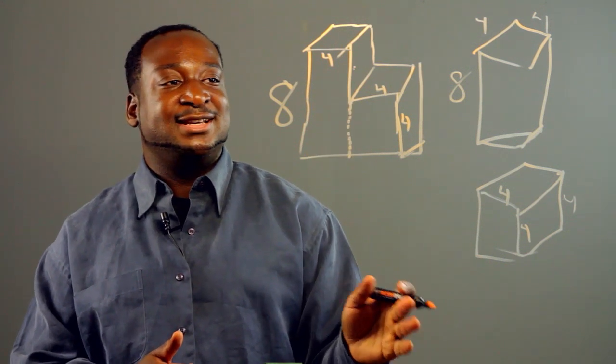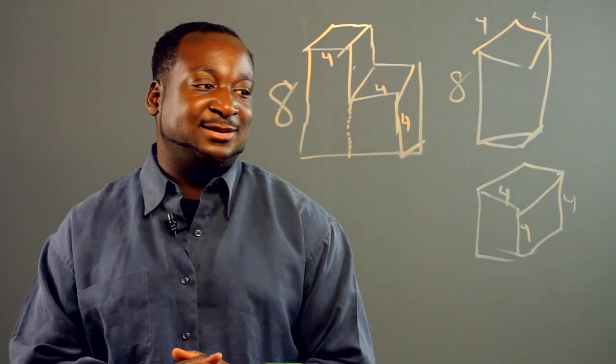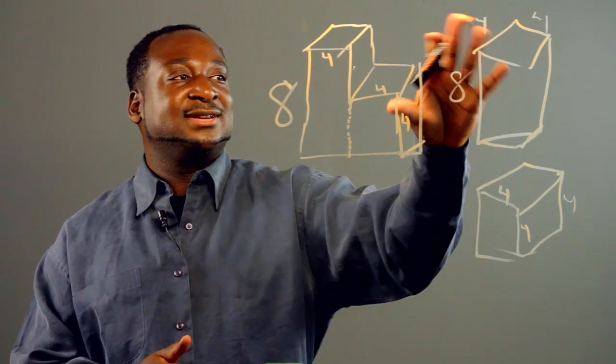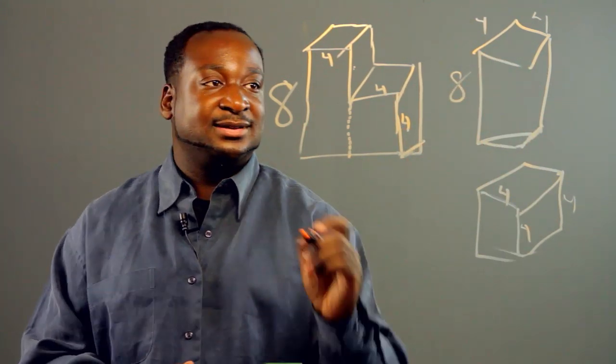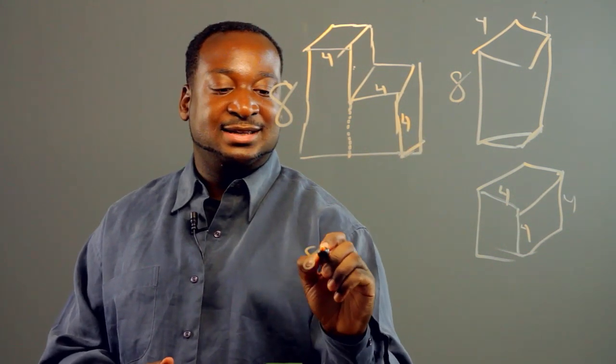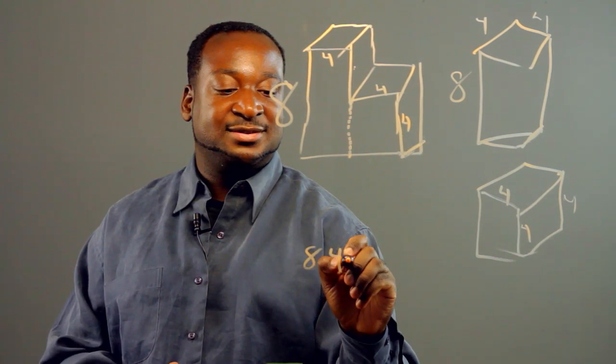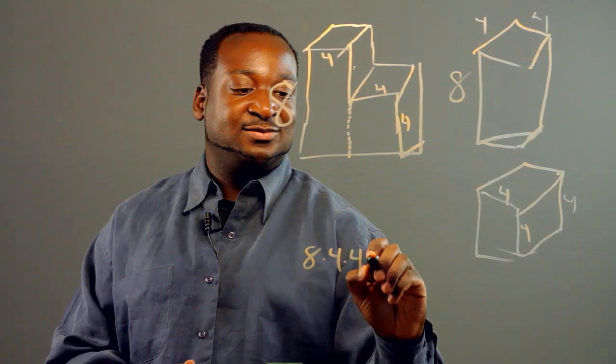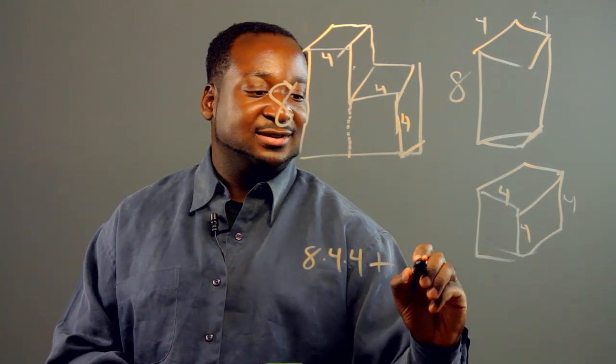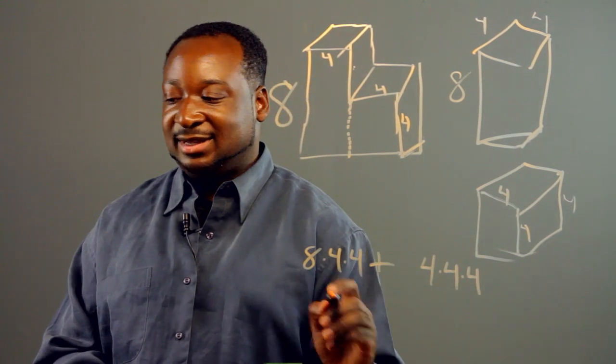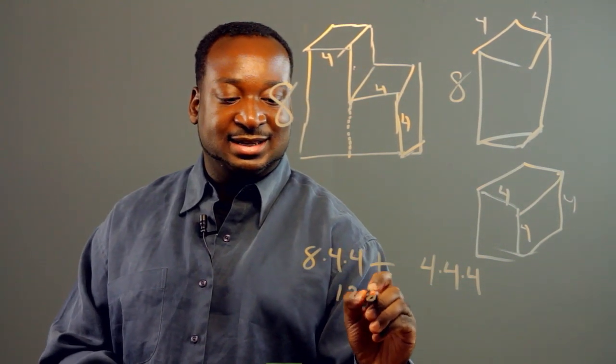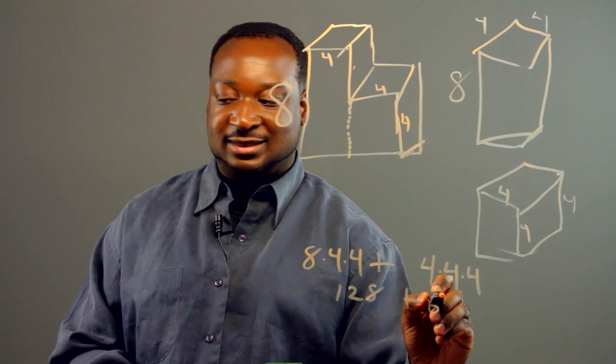I'm going to break it down into two regular shapes, and then I add all the volumes. Okay, now that's eight times four times four plus four times four times four. Then I get 128 plus 64.